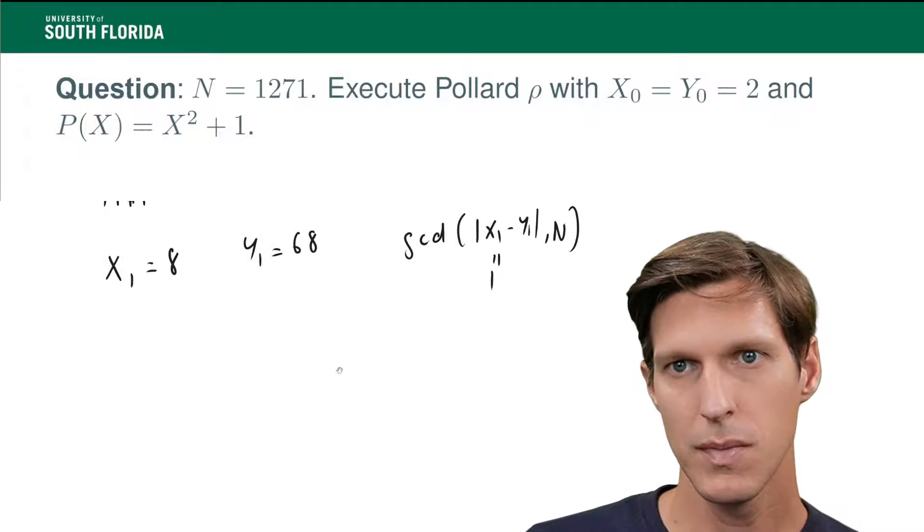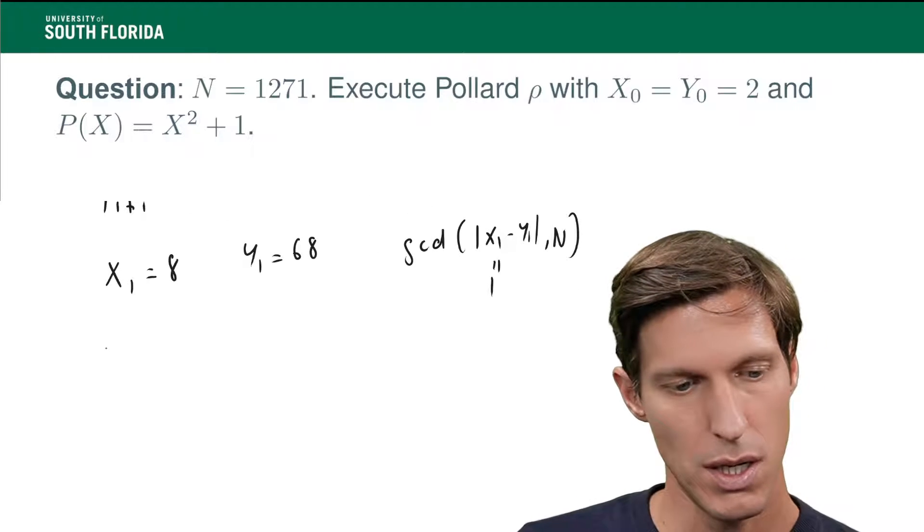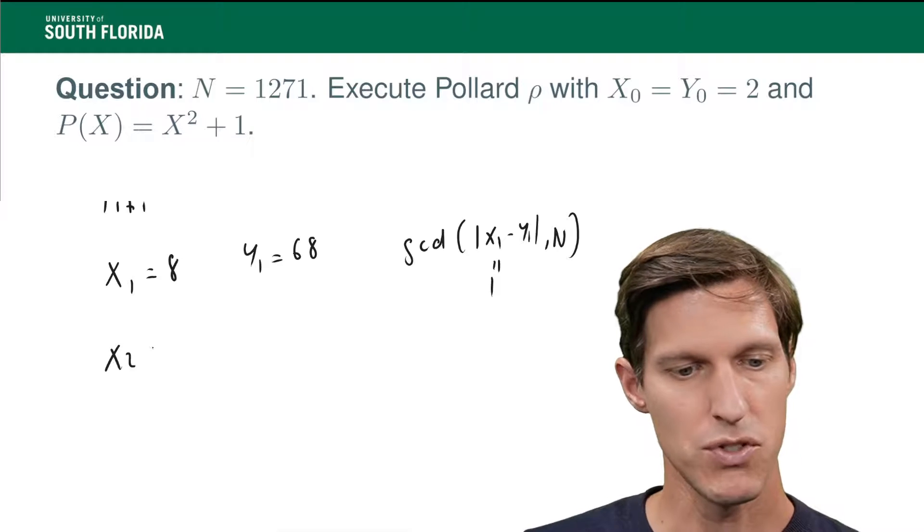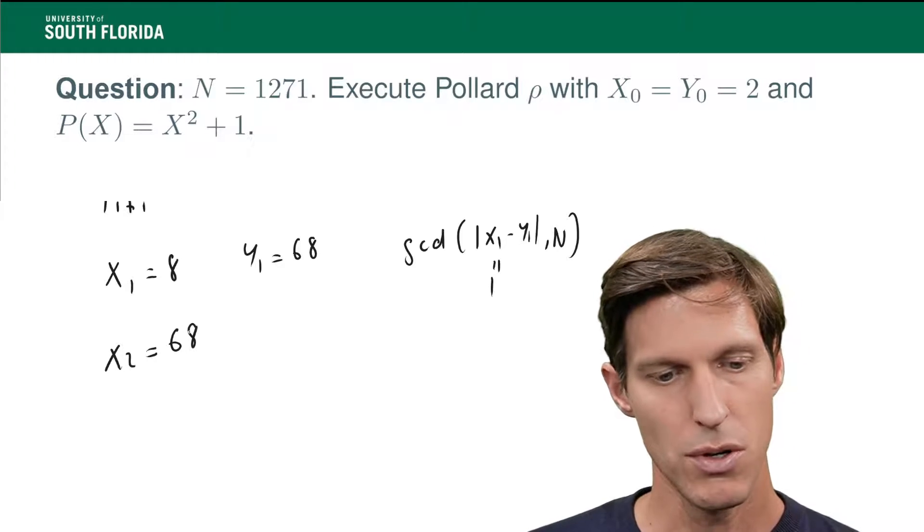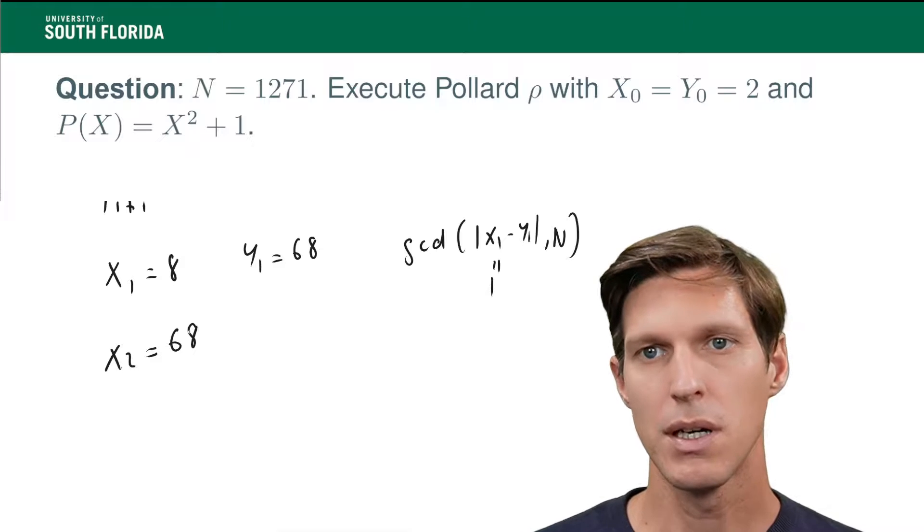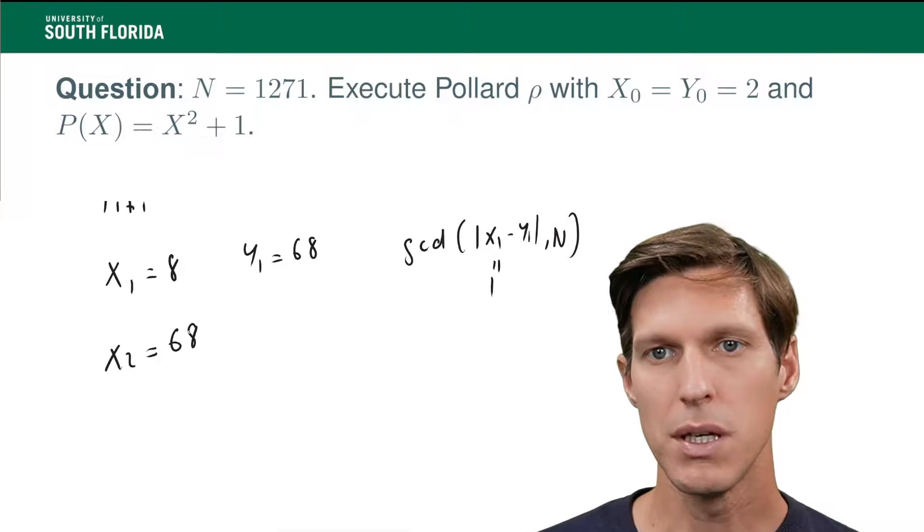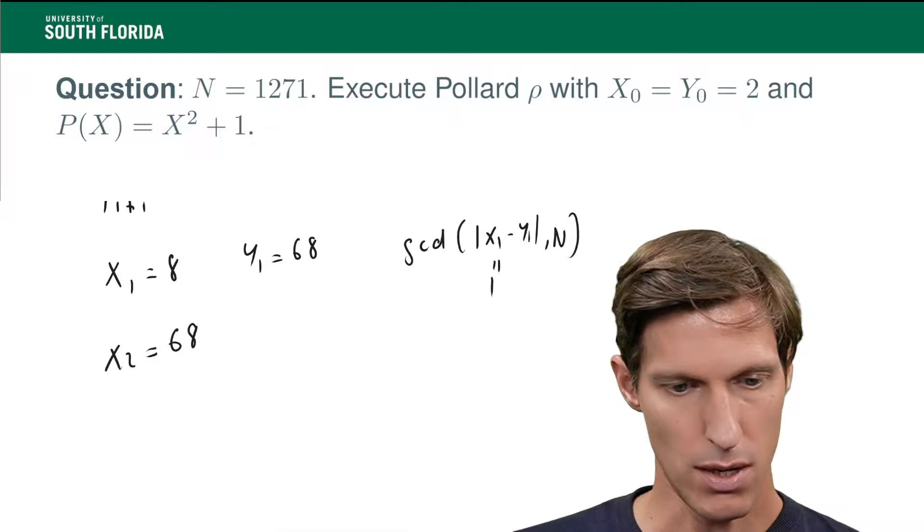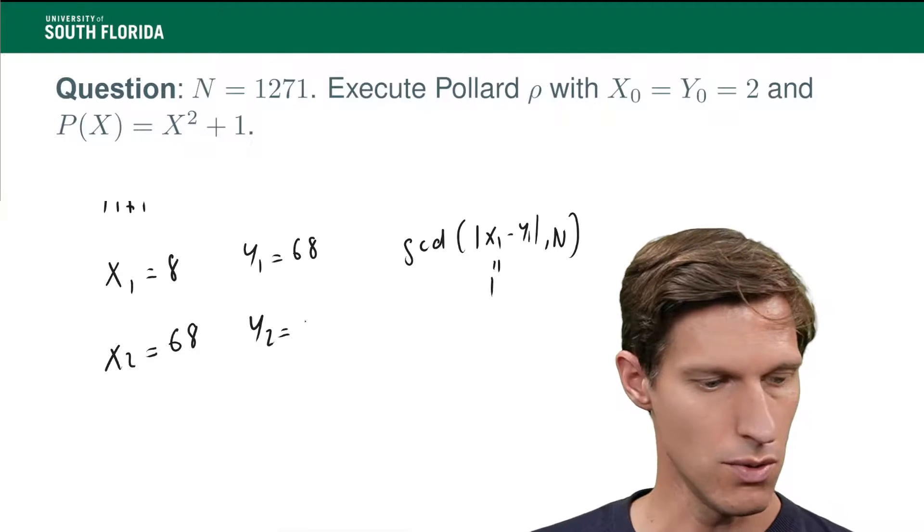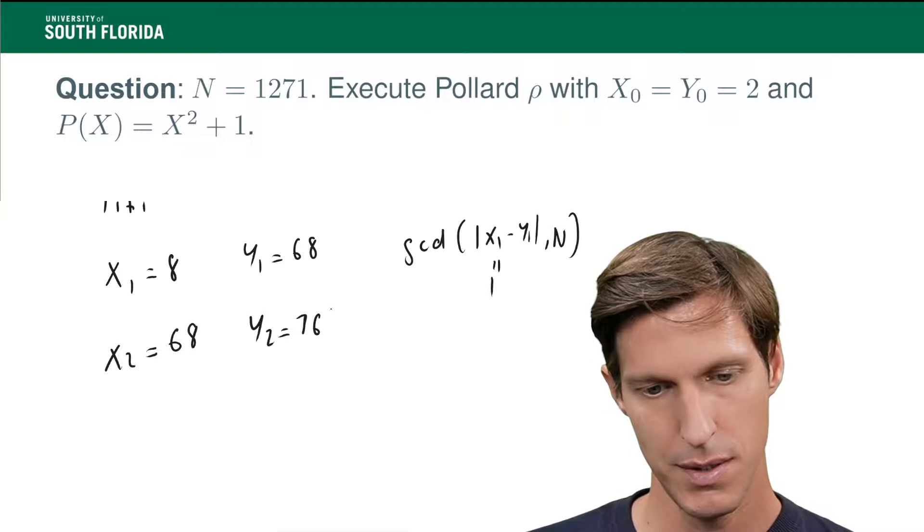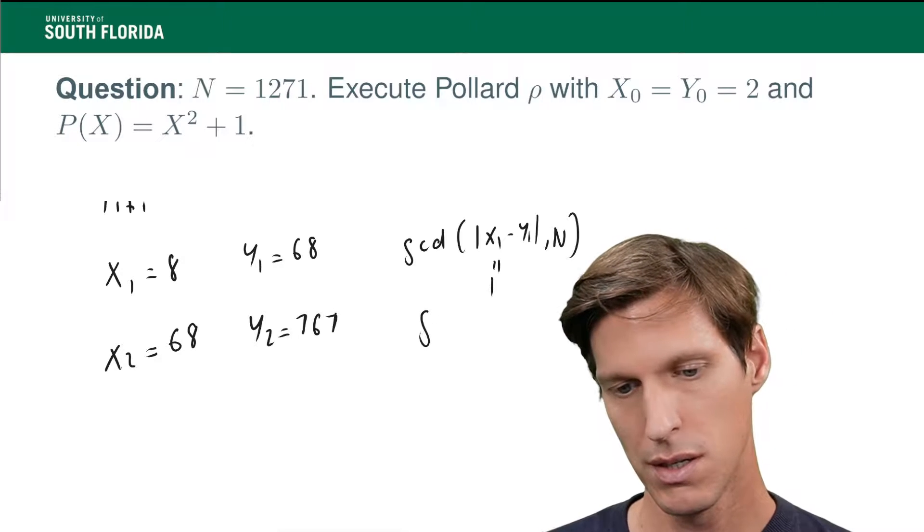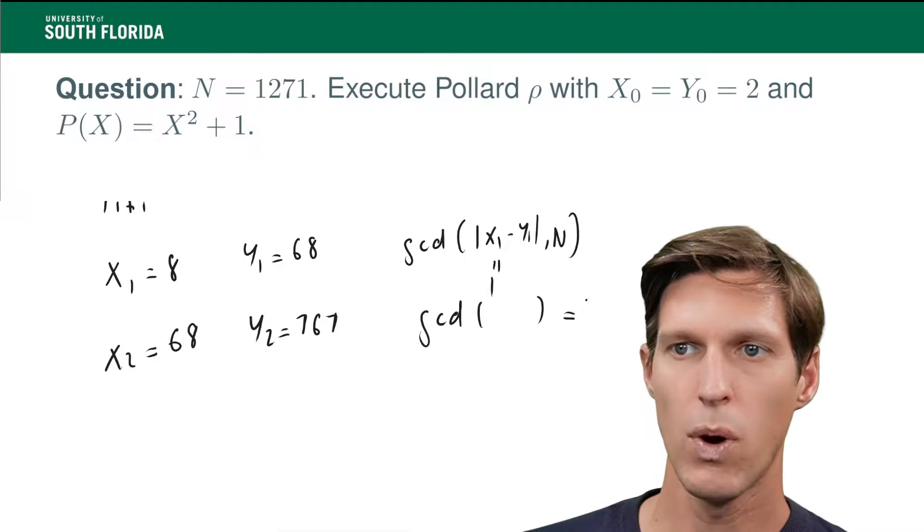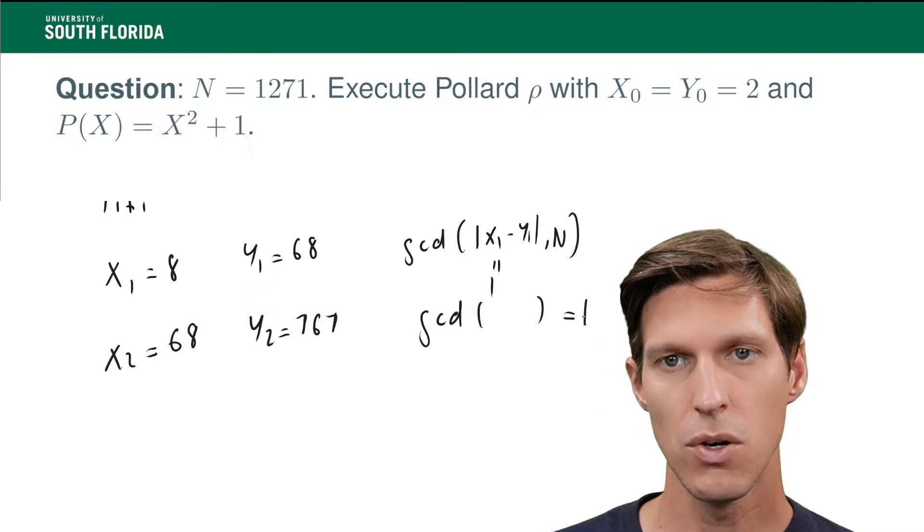So let's go to x2, which by the way happens to be y1. And that's because, remember, y is p of p. I mean, y is updated by doing p of p, and x is just one single iteration of p. So now, y2 equals 767. And our GCD here is also going to be 1. So we continue.